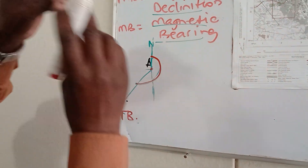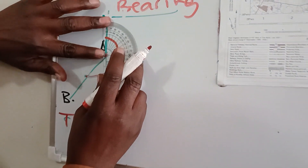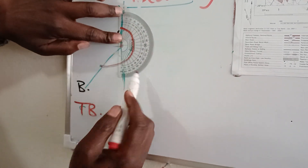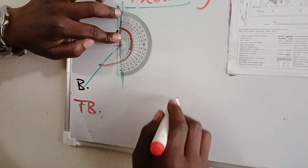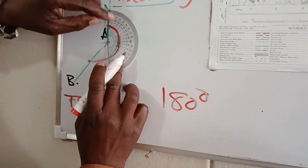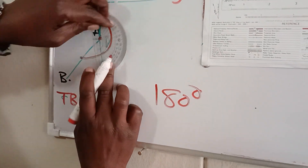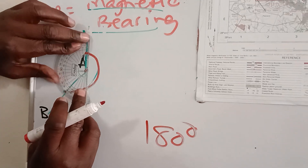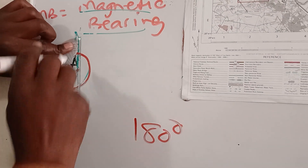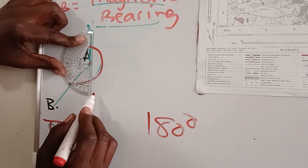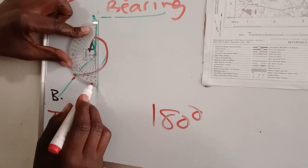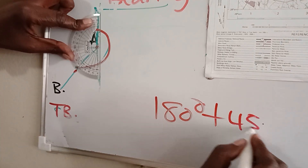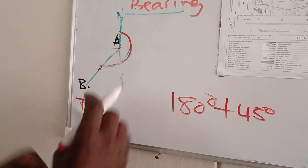You place your protractor along the line of the true north, starting from zero. It goes 10, 20, 30 — up when it gets there, it's a straight line. A straight line is equivalent to 180 degrees. So I've got my 180 degrees here, but I have to measure further. You measure true bearing clockwise, going from this line up until here.